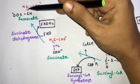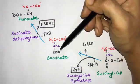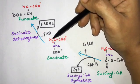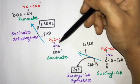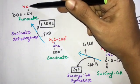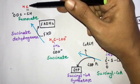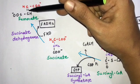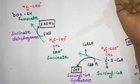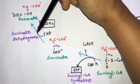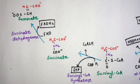In the sixth step, succinate undergoes a dehydrogenation reaction in which 2H are removed to form fumarate. As the two hydrogen atoms are taken out, a C=C double bond forms between the two carbons. This reaction is catalyzed by succinate dehydrogenase.